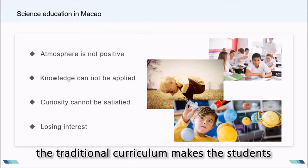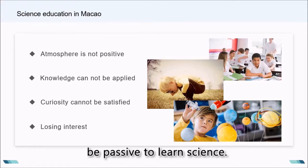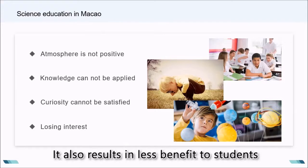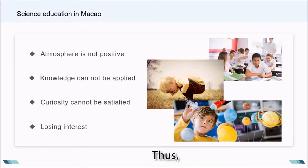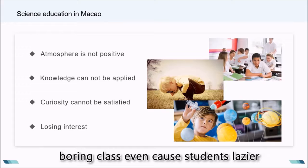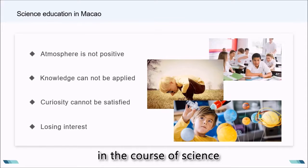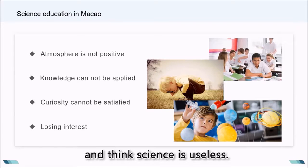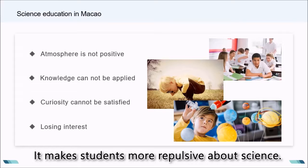At the moment, the traditional curriculum makes students passive learners of science. It also results in less benefits to students in the classroom. Boring classes even cause students to be easier in the course of science and think science is useless, making students more repulsive about science.